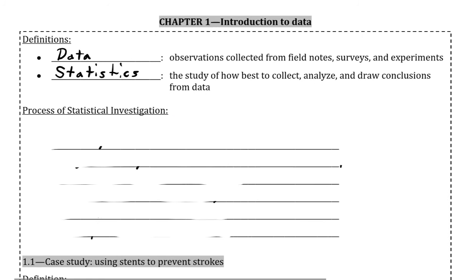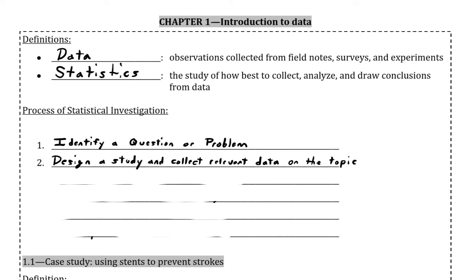There is a step-by-step process of six stages that you will see conducted in most, if not all, examples in this class. First, we will identify a question or problem that we wish to answer, followed by designing a study and collecting relevant data on the topic. Pay careful attention to the fact that the question is asked before the data is gathered. It is generally frowned upon to gather data and then design your statistical analysis based on what you gathered, as it is very easy to become biased in your analysis.